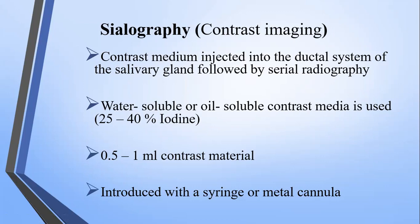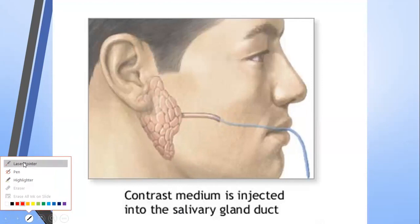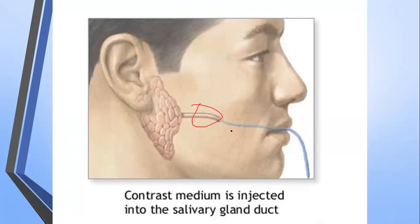We use 0.5 to 1 ml of contrast material, introduced with the help of a syringe or metal cannula. As shown in the picture, the cannula is placed and the contrast medium is passed into the parotid gland duct. The contrast travels into the parotid gland and then you do the radiography. Remember: sialography is the gold standard for detecting salivary gland problems.